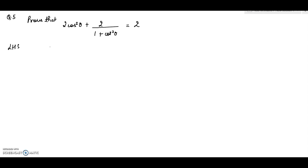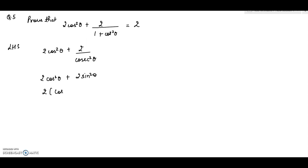Prove that 2cos²θ + 2/(1 + cot²θ) = 2. Since 1 + cot²θ = cosec²θ, the reciprocal of cosec²θ gives 2sin²θ. Taking 2 common you get 2(cos²θ + sin²θ), and since cos²θ + sin²θ = 1, the answer is 2. Hence proved.